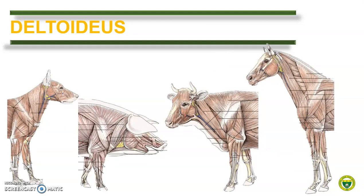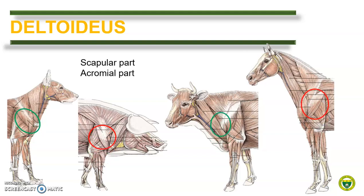Next, we move to the deltoidus muscle. The deltoidus has two parts: a scapular and an acromial part. In dog and in ruminants, both parts are present. However, in pigs and horse, the acromial part is missing and only the scapular part is present. Remember that horse and pig do not have an acromion in the scapula and their scapular spine fades distally.